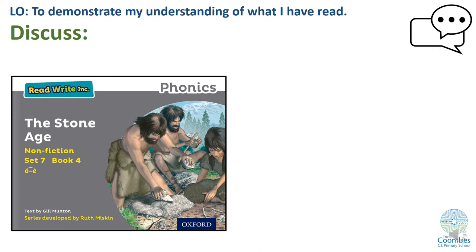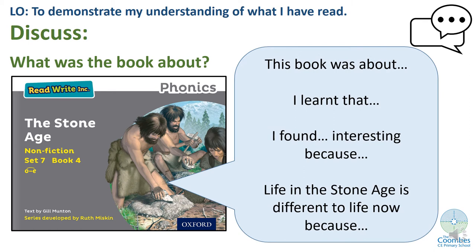Let's see if we can summarise what the book was about. Discuss with an adult what it was about. You can use these sentence stems to help you develop your sentences: 'This book was about…', 'I learnt that…', 'I found something interesting because…', 'Life in the Stone Age is different to life now because…'. Pause the video and tell a grown up what the book was about.